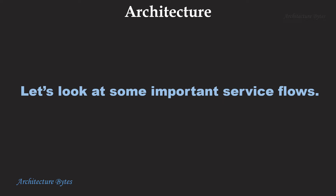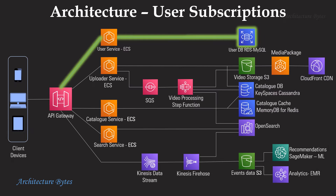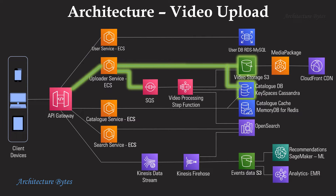Let's look at some important service flows. The user service flow is highlighted here — the user service receives requests related to user subscriptions and stores this information in Amazon RDS MySQL; an additional cache can be added alongside the database for faster access. The uploader service receives video uploads which are placed in an S3 bucket and an entry is made in the catalog database. A message is then placed in an SQS queue so that downstream processing of the video can begin asynchronously. Another way to upload video files directly to S3 is to use pre-signed URLs.